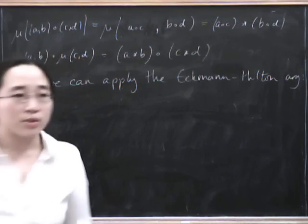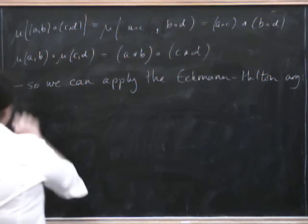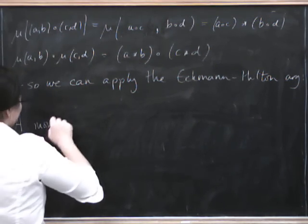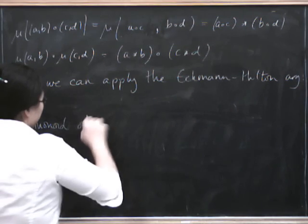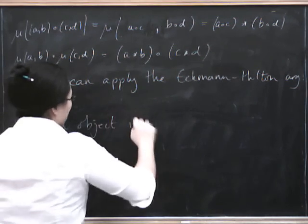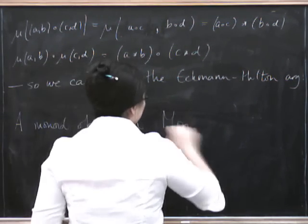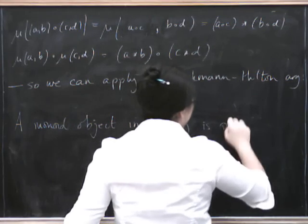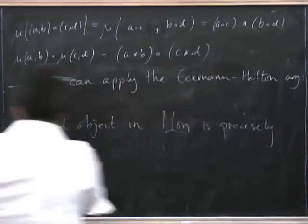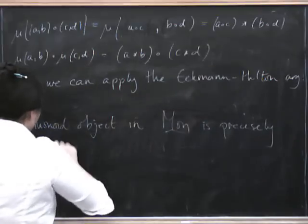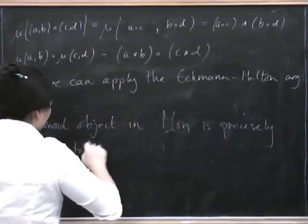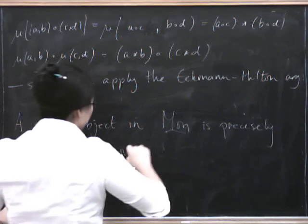And that's a good thing, because that tells us that this thing that we've defined really does satisfy the unit and associativity axiom that we want. So we get the fact that a monoid object in Mon is precisely a commutative monoid.